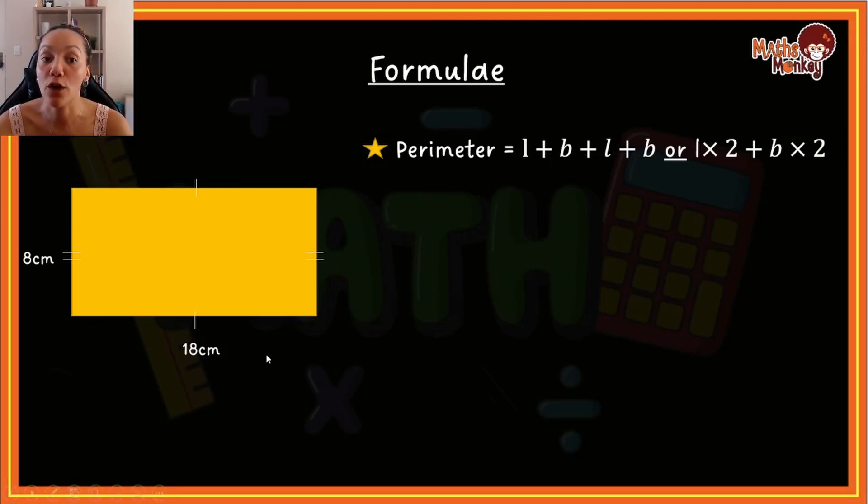If I were to calculate the perimeter of this specific question, then all I'm going to do is say perimeter equals 18 + 8 + 18 + 8. That will give me 52 centimeters. So I literally am saying 18 + 8, 18 + 8. Or what you could have done is 18 × 2 plus 8 × 2, and your answer is also 52.